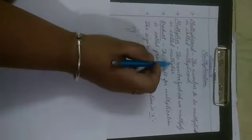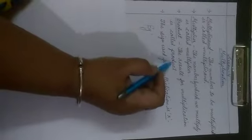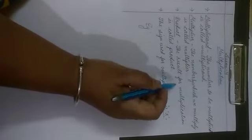Let us start with a standard 3 mathematics lesson for multiplication. Some important words related to multiplication: the first one is multiplicand — the number to be multiplied is called the multiplicand. Multiplier — the number by which we multiply is called the multiplier. Product — the result of multiplication is called the product. The sign used for multiplication is the times sign, or we can write it as a small x.